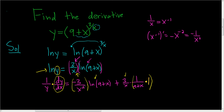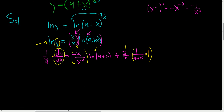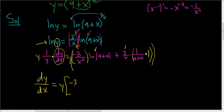To finish this, we'll just multiply both sides by y. This is the part that a lot of people mess up at the end. So dy/dx equals — multiplying by y, the y on the left cancels and we put a y on the right. So we get y times the bracket: negative 3 over x squared times natural log of 9 plus x, plus 3 over x times 1 over 9 plus x.